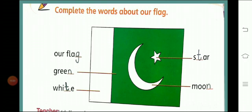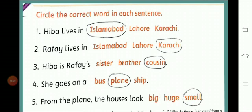Let's check the answers. For the flag words — flag: the missing letter is 'g'; green: the missing letter is 'n'; white: the missing letter is 't'; star: the missing letter is 't'; moon: the missing letter is 'n'. For the circling exercise: Hiba lives in Islamabad. Rafi lives in Karachi. Hiba is Rafi's cousin. She goes on a plane. From the plane, the houses look small.